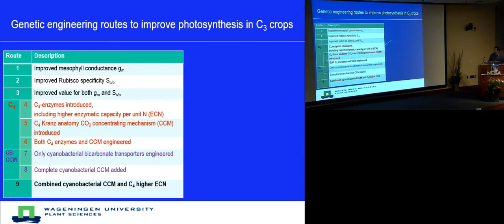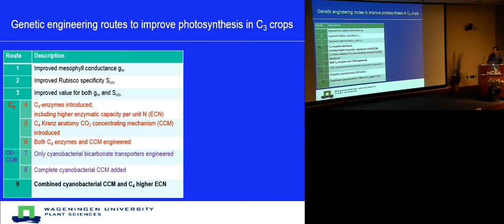The next step concerns engineering avenues to improve photosynthesis and C3 crop productivity. We examined the possibility of improving mesophyll conductance (Gm), improving Rubisco specificity factor (Sc/o), and combining both. Then we examined C4 possibilities using a stepwise approach: first, C4 enzymes including higher enzymatic capacity per unit of leaf nitrogen; then, Kranz anatomy-based CO2-concentrating mechanism from C4; then, combined C4 enzyme and CCM.